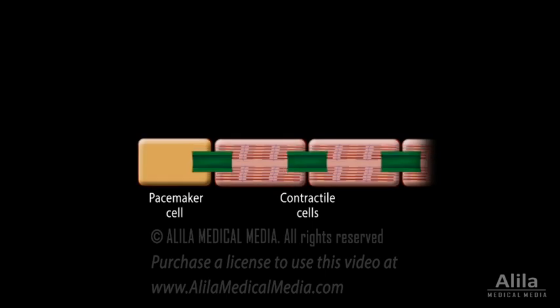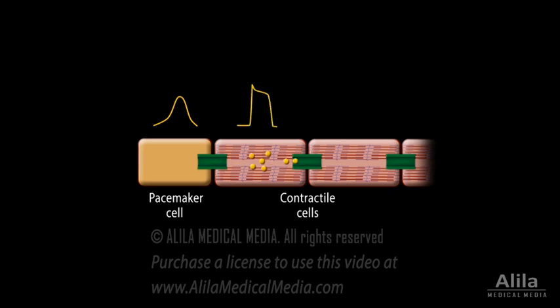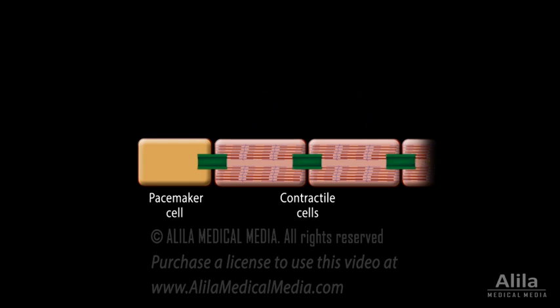Myocytes are connected by gap junctions which allow ions to flow from one cell to another. This way, an action potential in one cell triggers another action potential in its neighbor, and the signals spread rapidly.